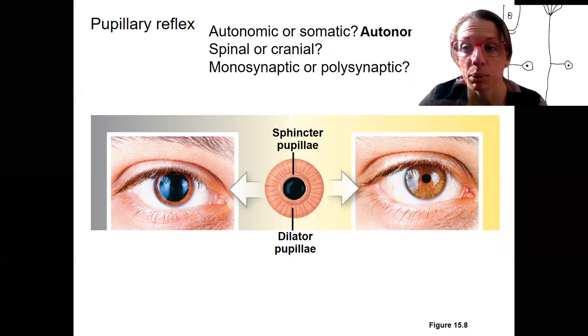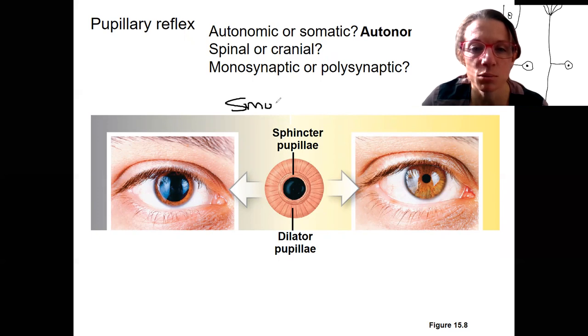It's autonomic. How do we know that? Because they are smooth muscles. Smooth muscles are the effector or target. When we have smooth muscles as the effector, it has to be an autonomic reflex. Skeletal muscles are the effectors for somatic reflexes.